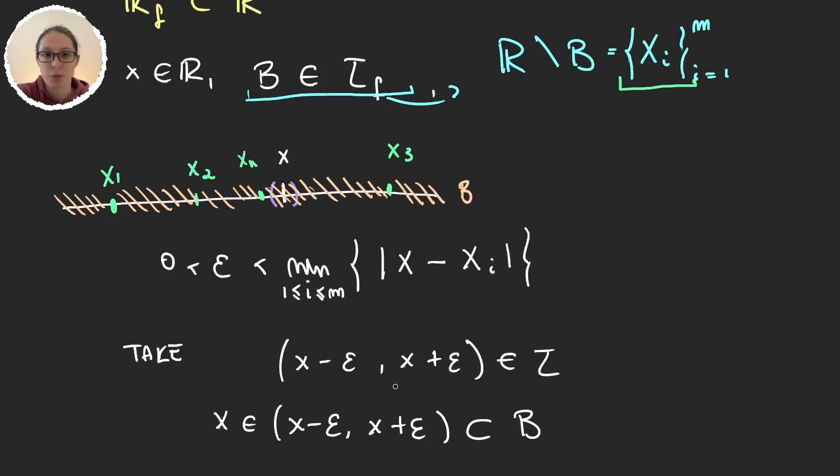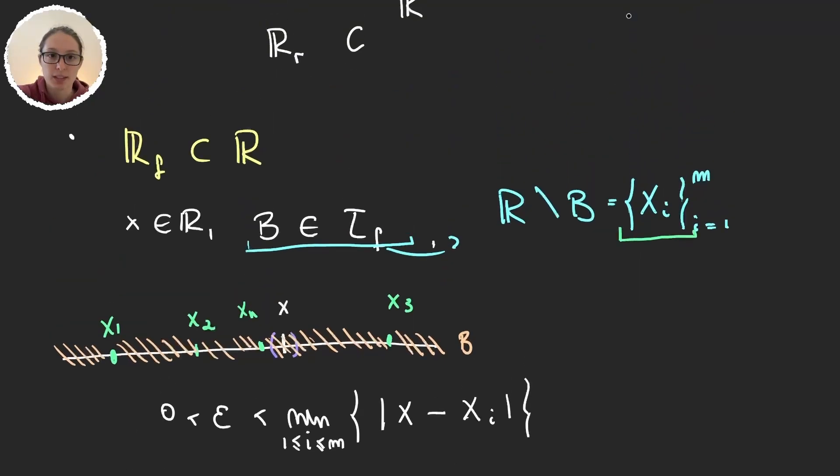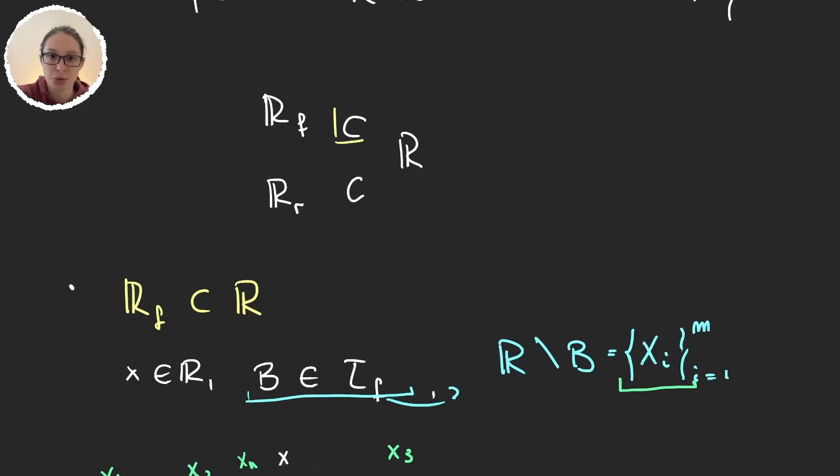And so we were able to prove what the lemma tells us to, and so we have that the finite complement topology is a subset of the standard topology. So with this, we have proven this inclusion.